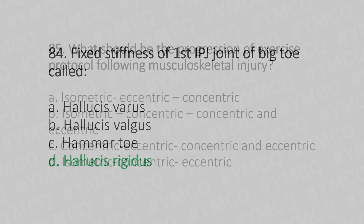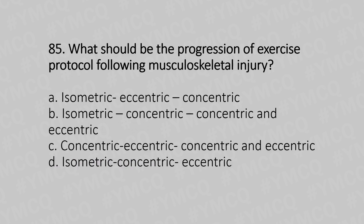Question 85: What should be the progression of exercise protocol following a musculoskeletal injury? Option A: isometric, eccentric, concentric; option B: isometric, concentric, and eccentric; option D: isometric, concentric, eccentric. The answer is option A: isometric, eccentric, and concentric.